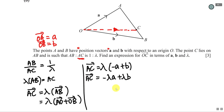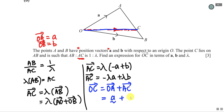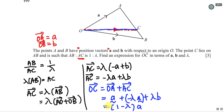Now I can find OC, since OC = OA + AC. My OA = a, and AC = -λa + λb. So OC = a + (-λa + λb) = (1 - λ)a + λb. I group the a terms: one a minus λa gives (1 - λ)a, plus λb. This is the answer, expressed in terms of a, b, and λ.